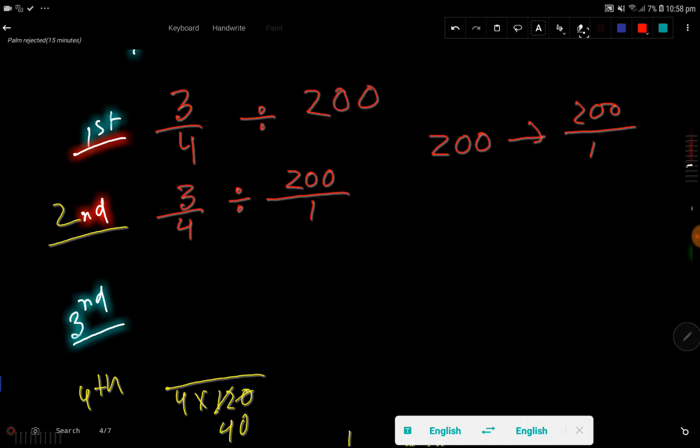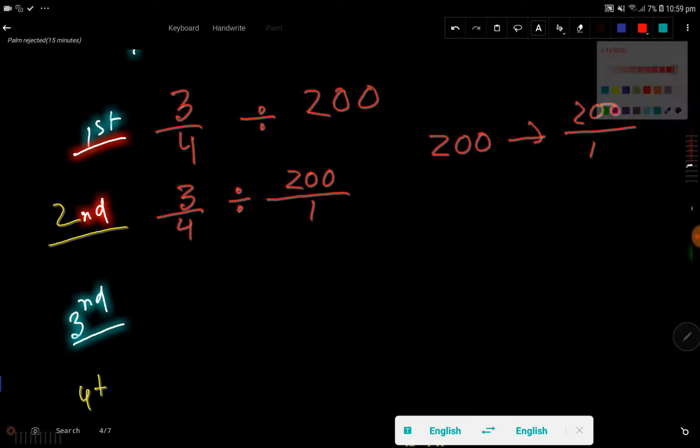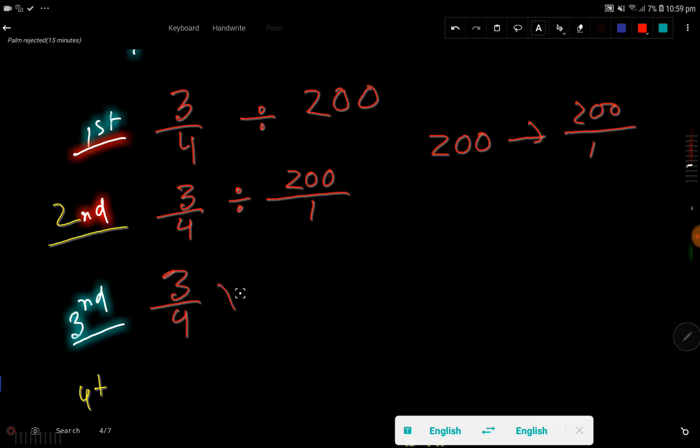Now in the third step, what I will do is I will just change this division sign by multiplication sign, then I will take the reciprocal fraction of this fraction.